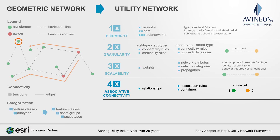Similar to what Wi-Fi did for Internet connectivity, utility network shatters this limitation through associations. Associations provide a way to connect two junctions without physically having an edge between them. On a related note, utility network also offers containers. Containers provide an easy way to hide away localized connectivity details to produce more readable views and map products at scale. The details can be toggled on when tracing and updating the connectivity. This is the fourth reason utility network significantly outperforms its predecessor, the geometric network.